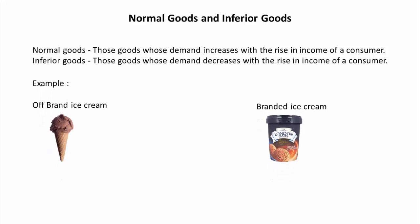Let us take an example to understand this in detail. Say there are two types of ice cream available in the market: off-brand ice cream and branded ice cream. And you are currently consuming off-brand ice cream. Now suppose your income rises by $5,000. It is likely that you will switch from off-brand ice cream to branded ice cream.